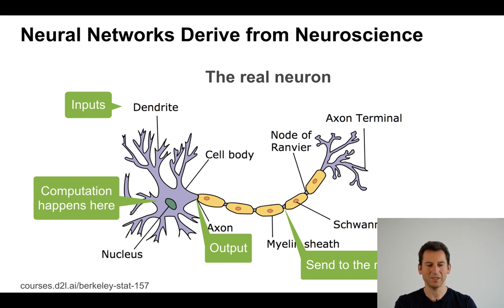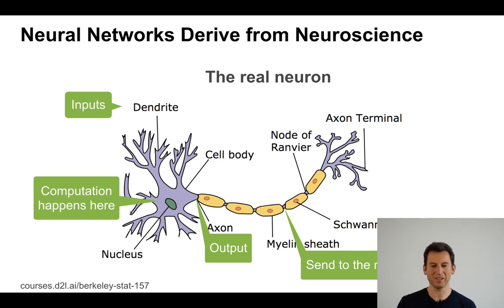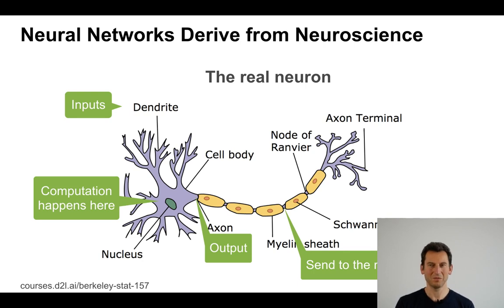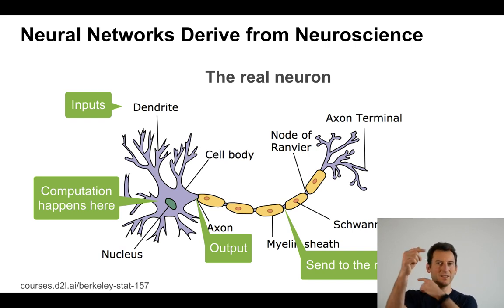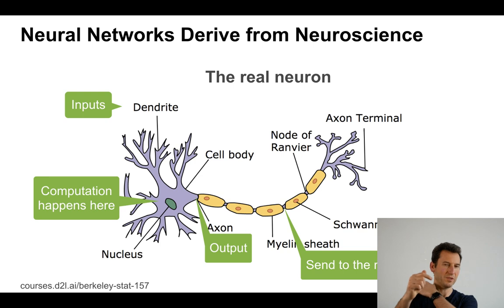In biology, you have dendrites that gather all the inputs, maybe with synaptic weights — so you get basically inputs times the weighting. This is all fused in the nucleus or soma, and then you get an output that goes somewhere else — the axon sends it to some other part of the brain. Those neurons can be very long. For instance, cells that control muscles might have a cell body in the head, traveling through the arms all the way to the fingers so you can move them — one very long wire.